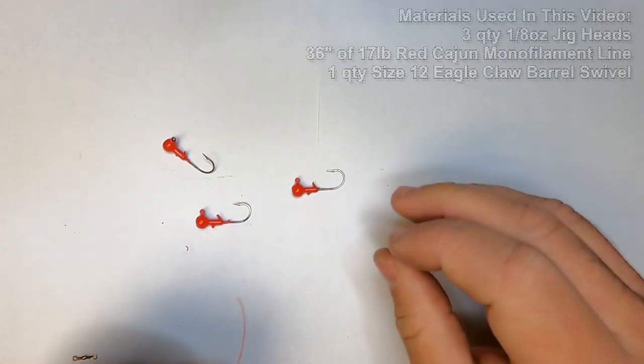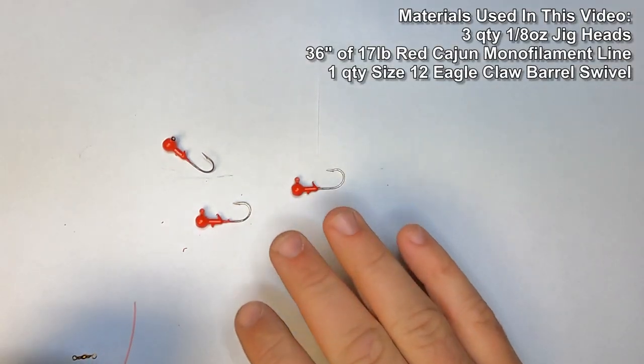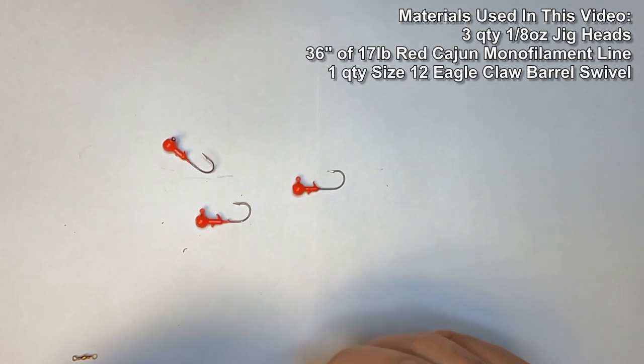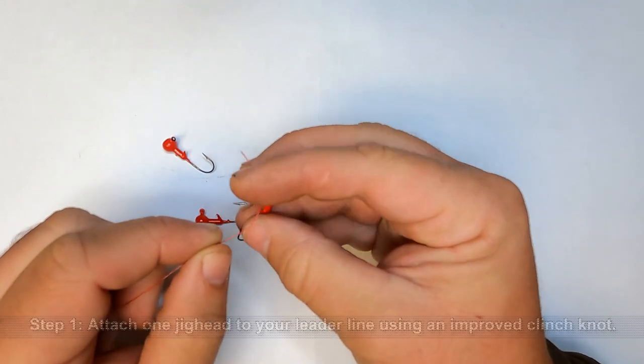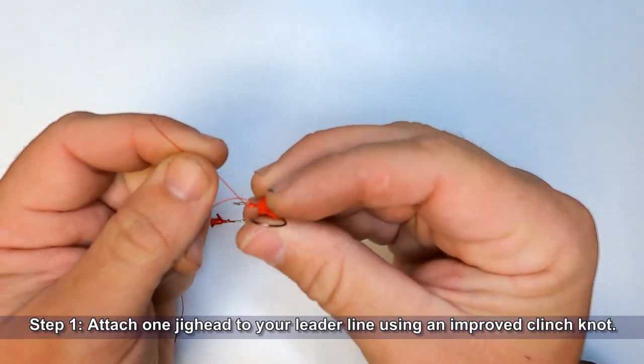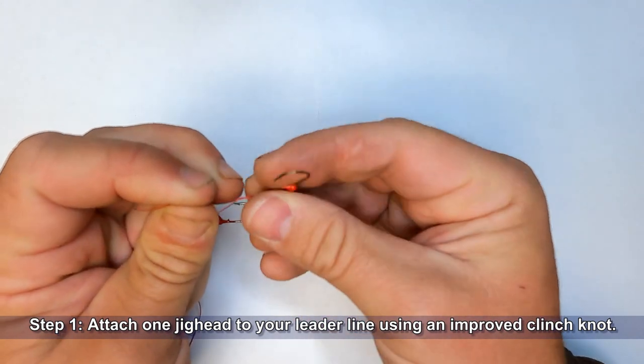Alright guys, we're going to start working on the skipjack rig here. This is what I use most of the time when I'm out catching skipjack. So we'll tell you guys the story of the three little jigs. We'll take this first jig head, it doesn't matter which one it is, this is going to be at the bottom of our line.